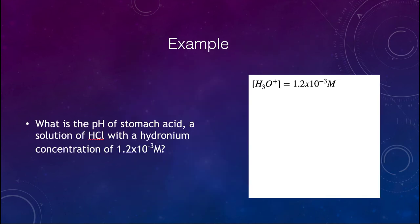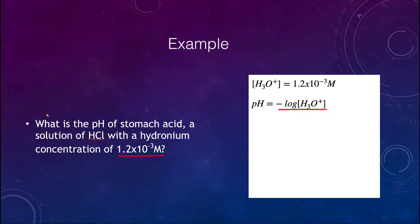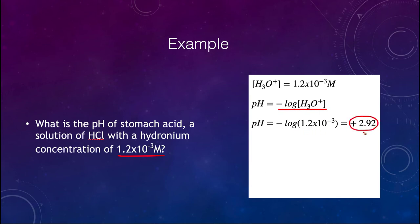Let's calculate the pH of stomach acid — hydrochloric acid with a hydronium concentration of 1.2×10⁻³ molar. The equation for pH is minus the log of H₃O⁺, so we compute minus the log of 1.2×10⁻³. Putting that into a calculator gives a pH of positive 2.92. I recommend you double-check these numbers yourself so that when working on problems you can verify you're getting the same results.